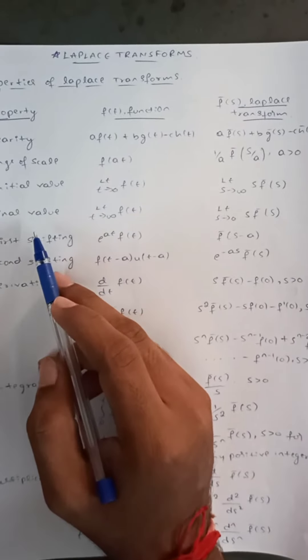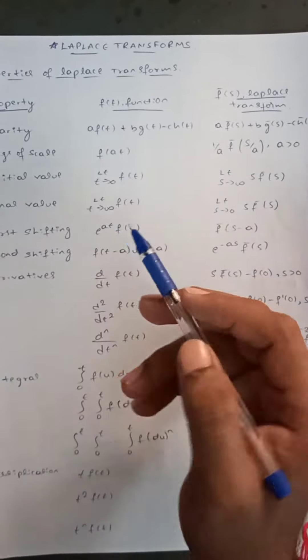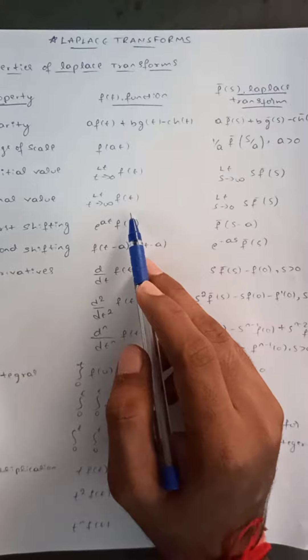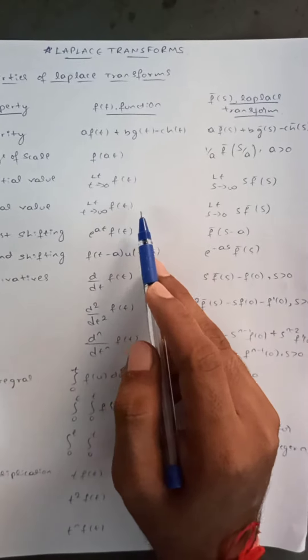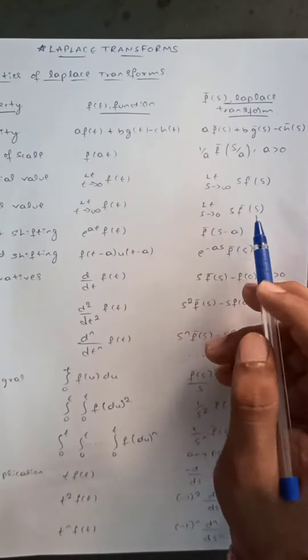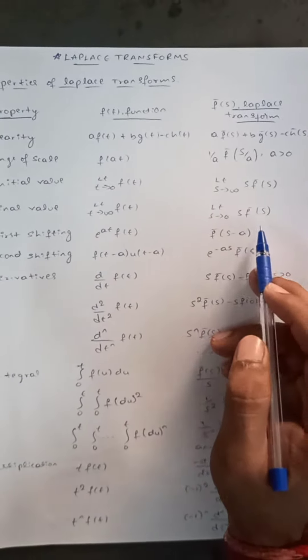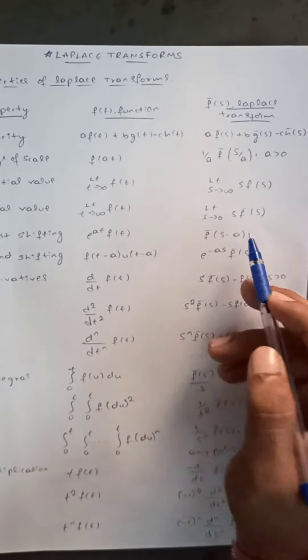The final value theorem states that the limit of f(t) as t tends to infinity equals the limit of s·f̄(s) as s tends to zero.